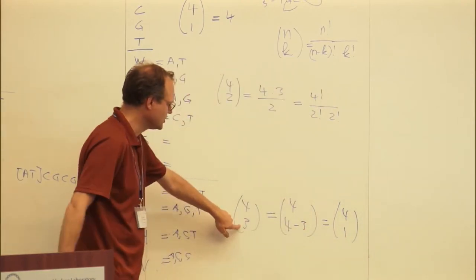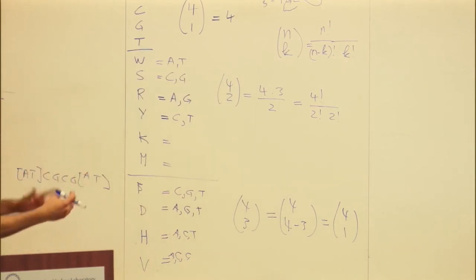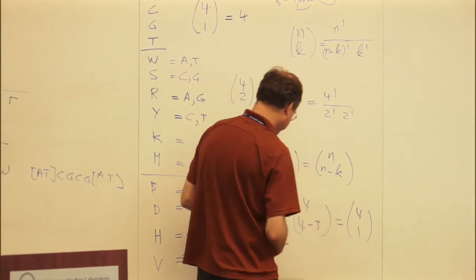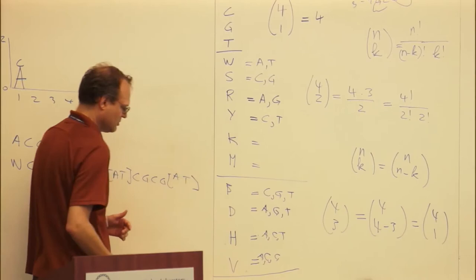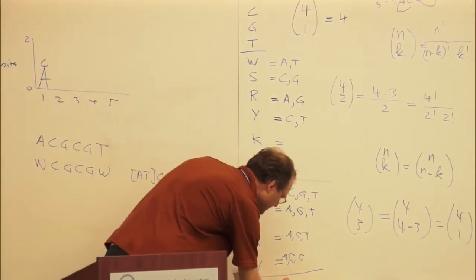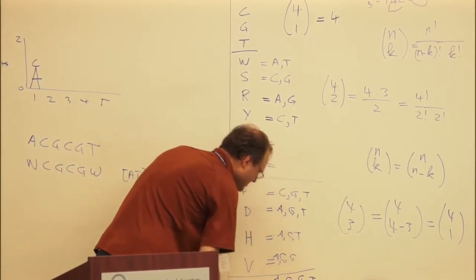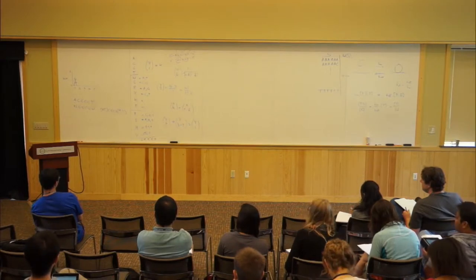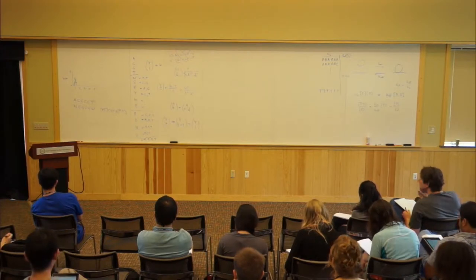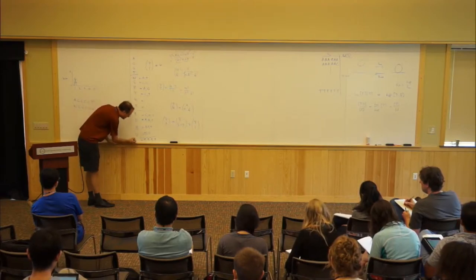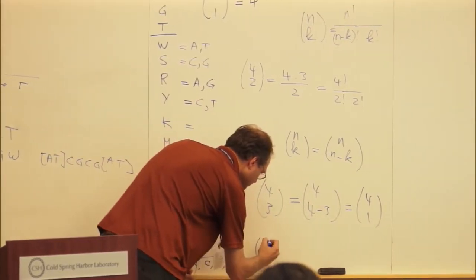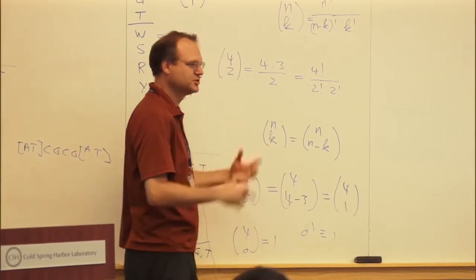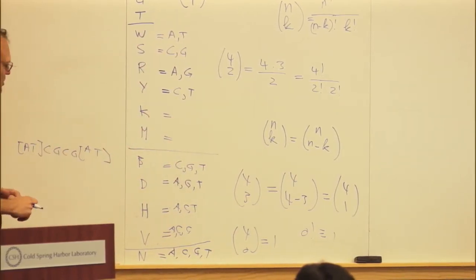Here there were 4 choose 1 — four symbols for single bases. We have 4 choose 2 which is 6. This block is 4 symbols because it's 4 choose 3, which is the same as 4 choose 1. Instead of specifying what we're choosing, we could specify what we're not choosing — by symmetry, n choose k equals n choose (n minus k). There's one more symbol: A, C, G, or T — that's N for 'any base.' And 4 plus 6 plus 4 plus 1 equals 15, not 16, because we're not counting the empty set — choosing no bases doesn't make sense in this context.